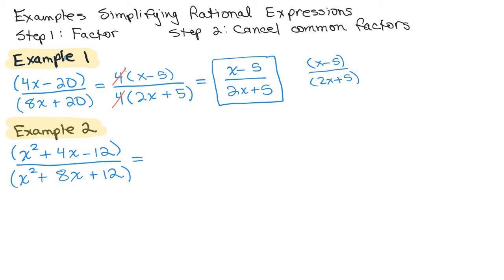Both of these are trinomials. And you could do this on scratch paper, figuring out what the factors to each of them are. To get the X squared, I have to have X and X. And I'm going to have a minus 12. So I'm going to have a plus and a minus. And I'm going to end up with a plus 6 and a minus 2.